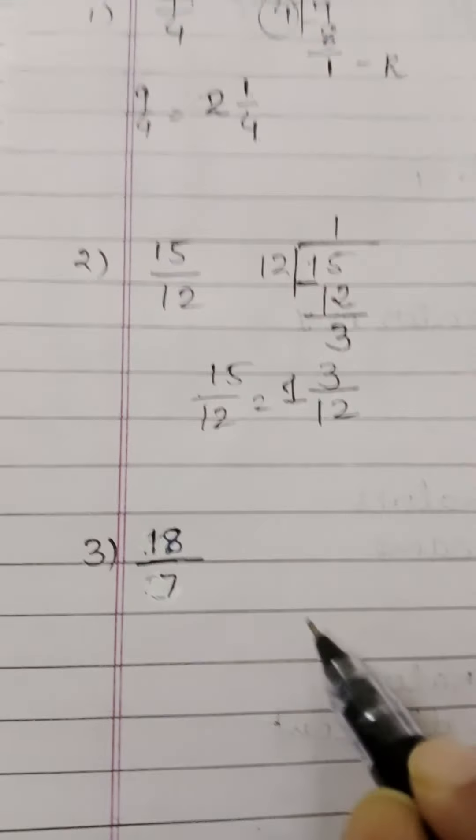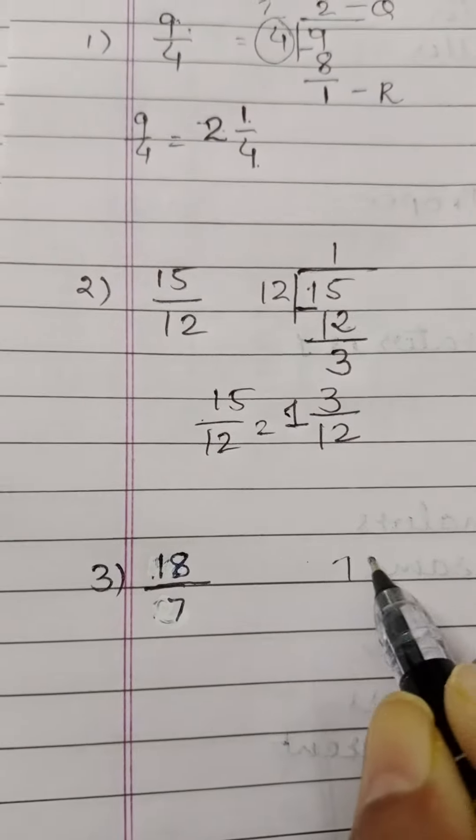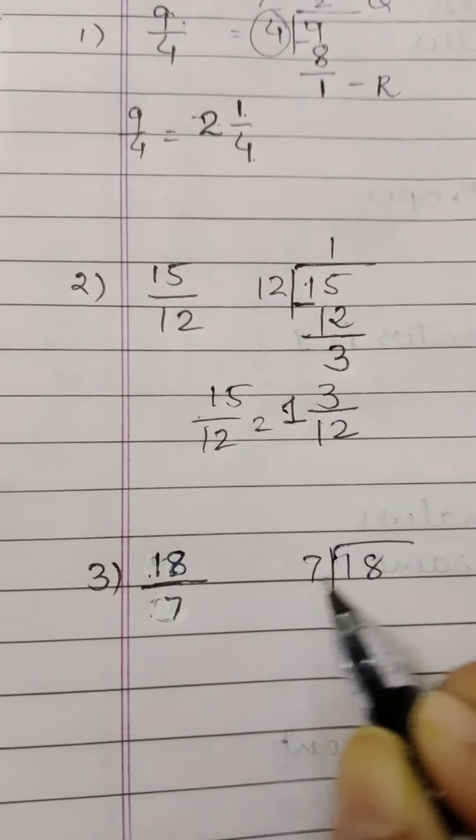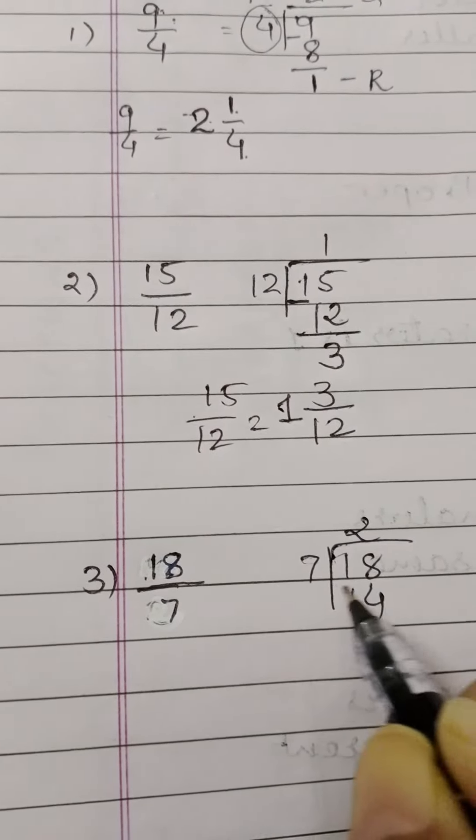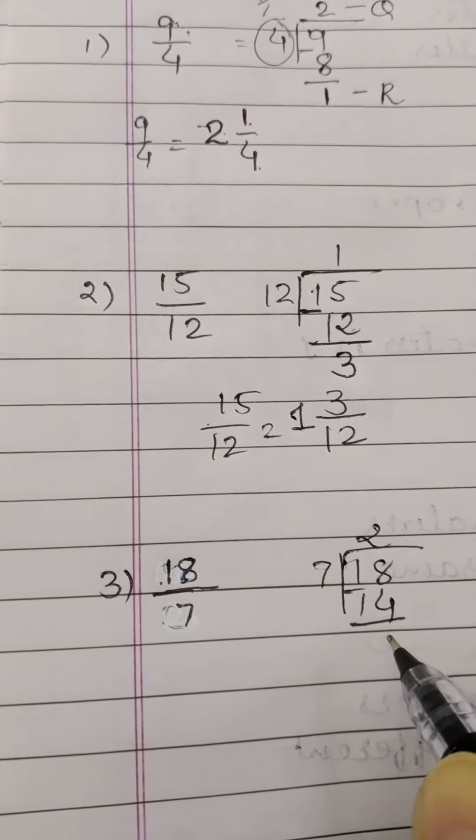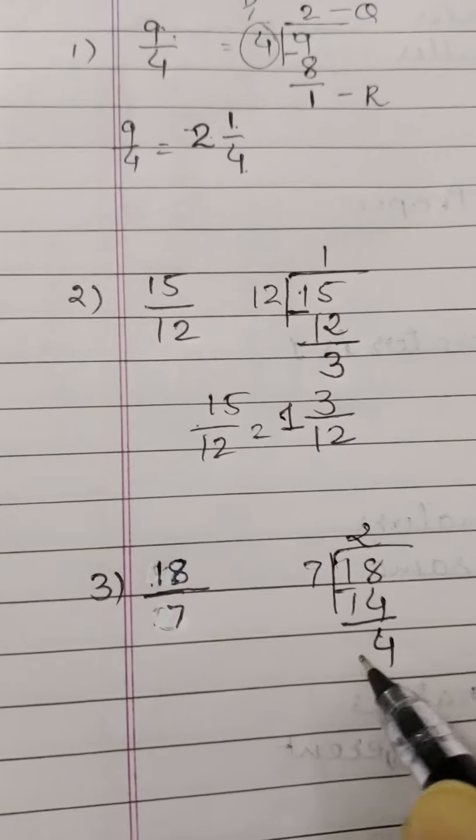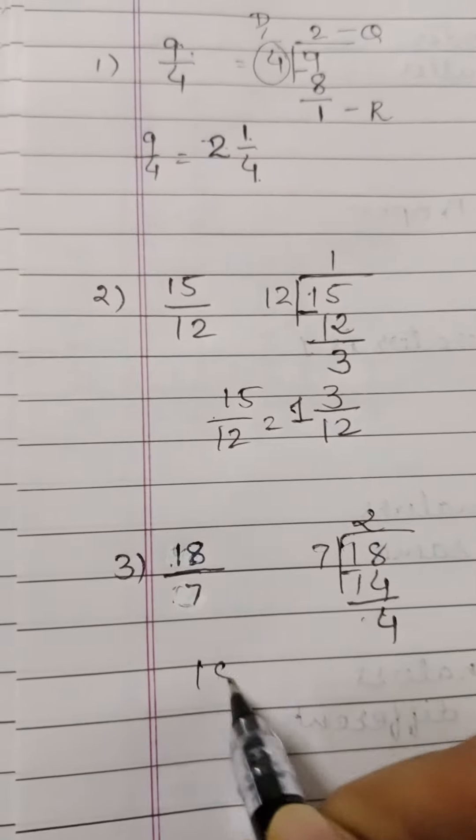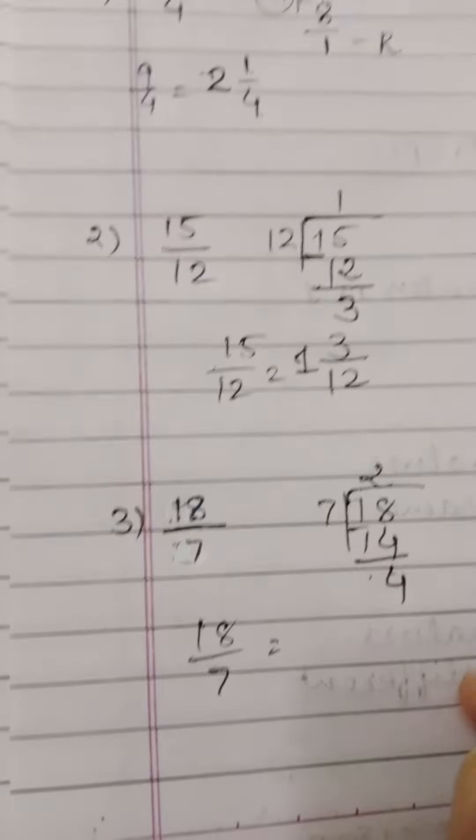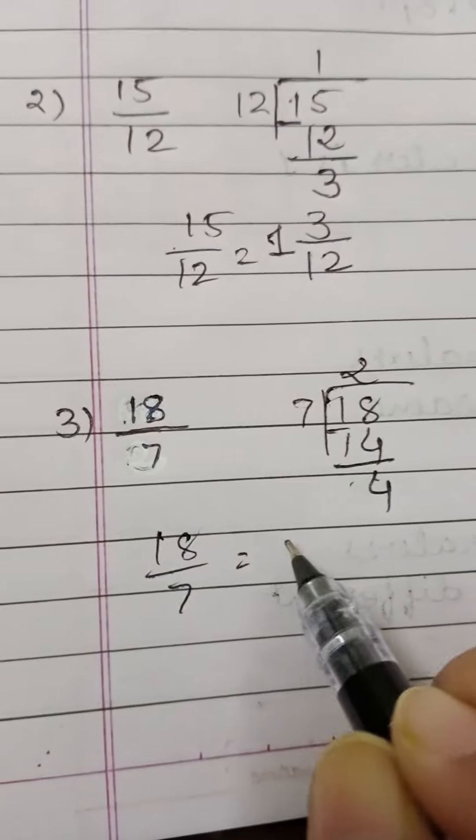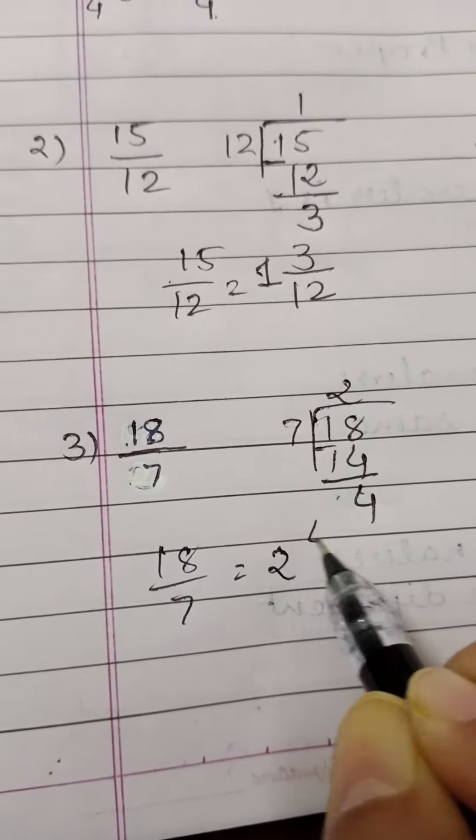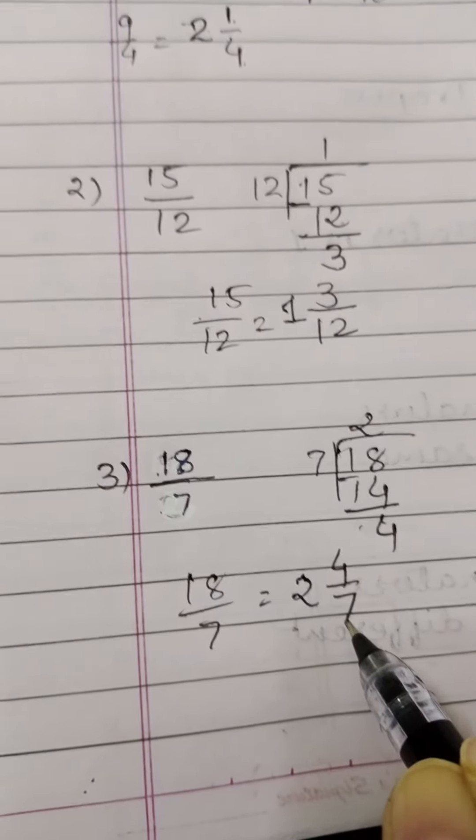Next example is 18 upon 7. So you will divide this 18 by 7. 7, 2's are 14. Here 8 minus 4 is 4. 1 minus 1 is 0. So 18 upon 7 is actually written as in mixed fraction 2 integer 4 upon 7.